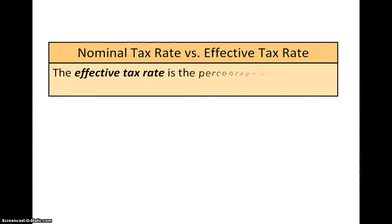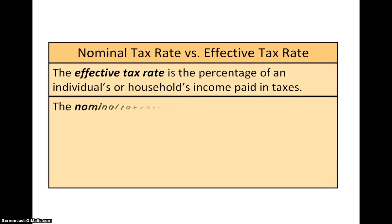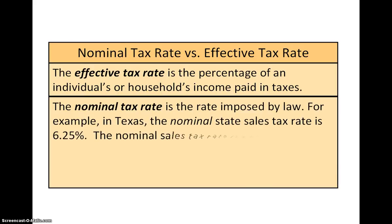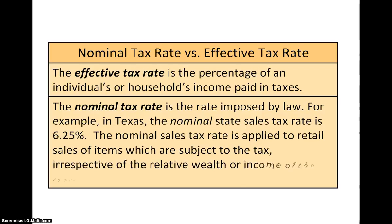The effective tax rate is the percentage of income that a person or household pays in taxes, and is distinguished from the nominal tax rate, which is the rate that is imposed by law. For example, in Texas, the nominal state sales tax rate is 6.25%. The nominal sales tax rate is applied to all retail sales of items which are subject to the tax, irrespective of the relative wealth or income of the individual making the purchase.